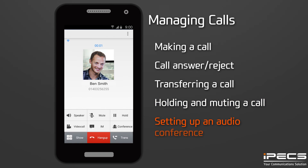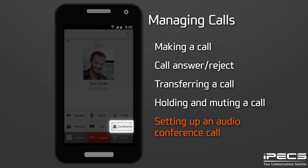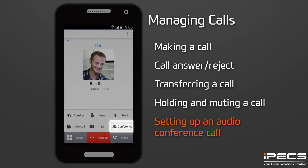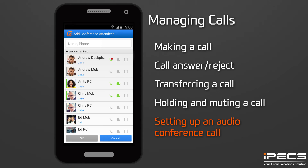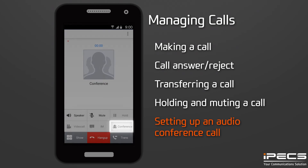You can use IPEX UCS to set up a multi-party conference call. Make or receive a call as normal using the dial pad or contacts menu, then press the Conference button. Place the second call, then press the Conference button again. To add additional parties, repeat these steps. Once all the calls have been established, press the Conference button again to connect all parties.